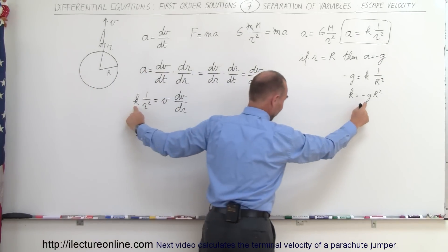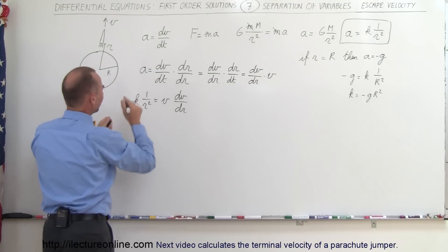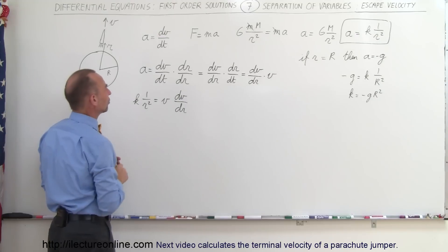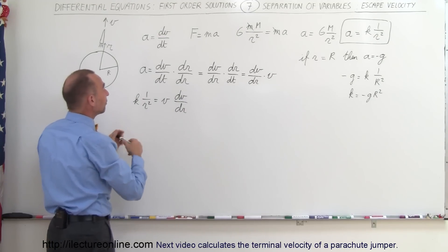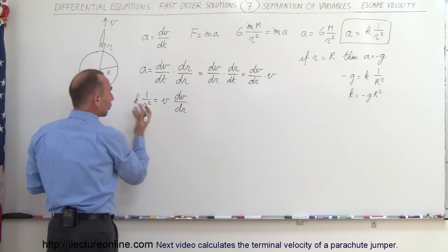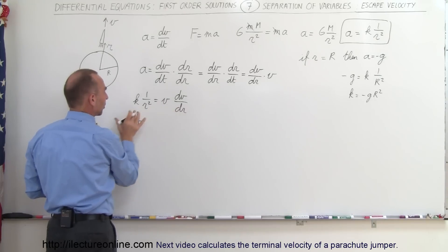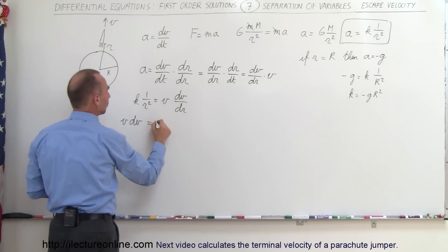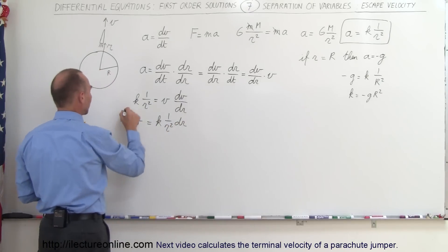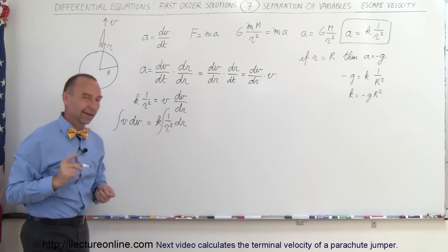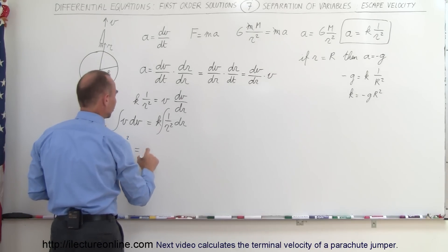Keep in mind that K equals minus g times R squared. Now I'll solve the equation using separation of variables by separating R and V. Rearranging, I write V dV on the left side equals K times 1 over R squared dr on the right side. Integrating both sides, on the left I get V squared over 2.